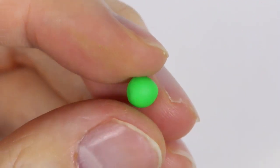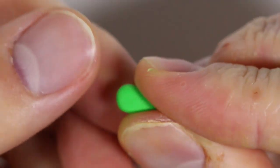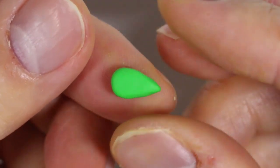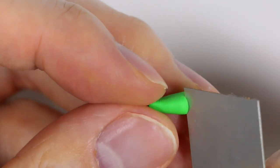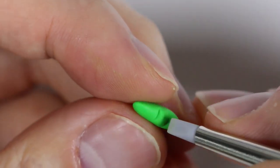For the palm tree leaves, we're going to take some green clay and we're going to pinch it into a teardrop shape and flatten it out. Then using our polymer clay blade, we're going to make two indents on one side of the leaf.